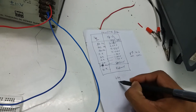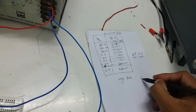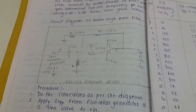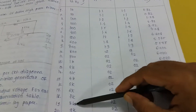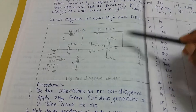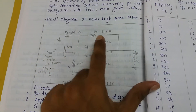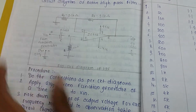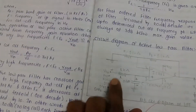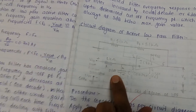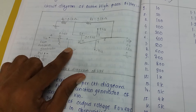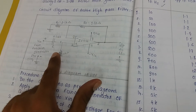Next is the high pass filter — it is the opposite behavior. When frequency increases, the output voltage also increases. The circuit is the same except R and C are interchanged: previously it was R then C (low pass), now it becomes C then R (high pass). Interchanging RC to CR gives the high pass filter.